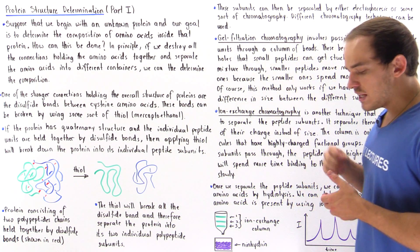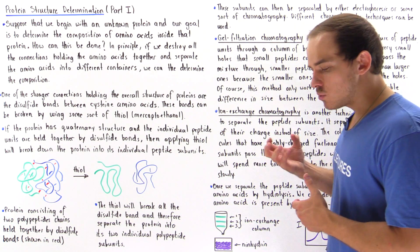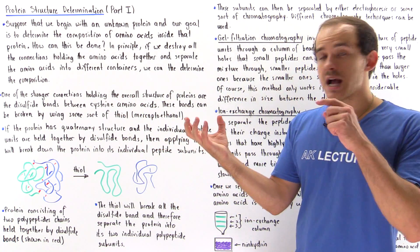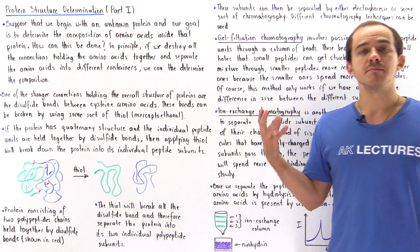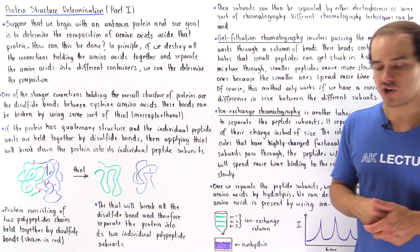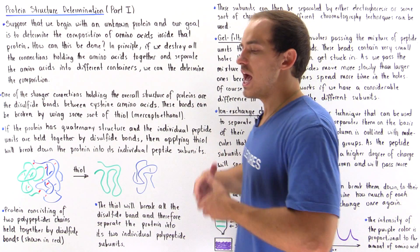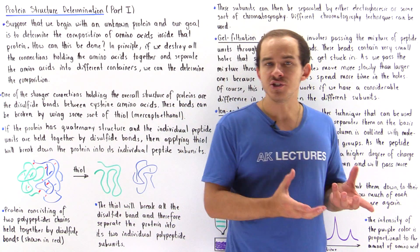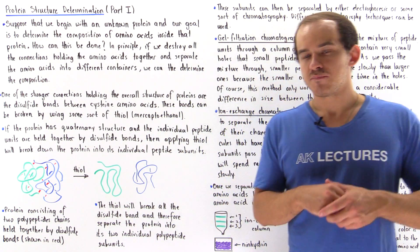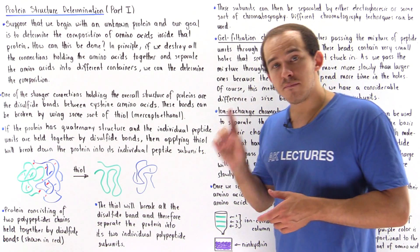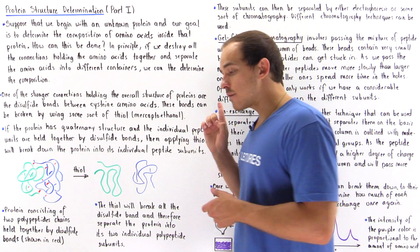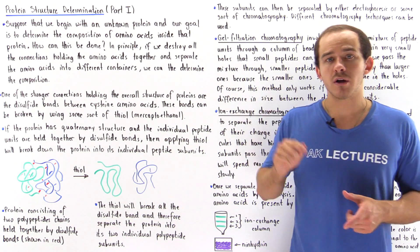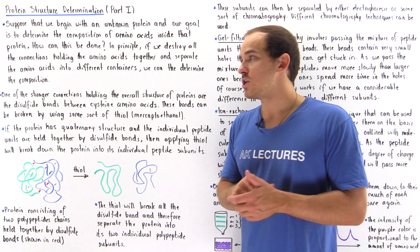Suppose that we begin with some unknown protein. We are given a beaker, and inside that beaker we have some type of unknown protein. The question is: how exactly can we determine the composition of that protein — which types of amino acids are found within it, and what is the number of each one of those amino acids?